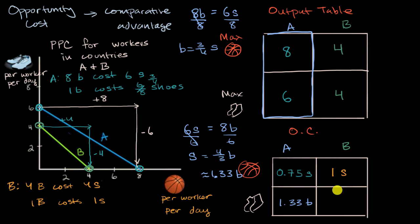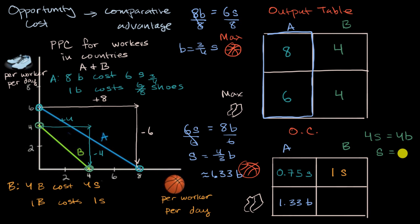In country B, the same energy that produces four pairs of shoes could produce four basketballs. Dividing both sides by four, the energy of one pair of shoes equals the energy of one basketball. So the opportunity cost of making a pair of shoes in country B is equal to one basketball.